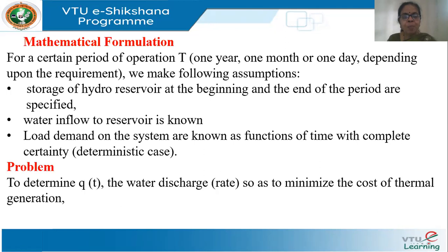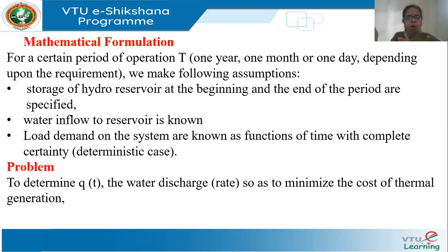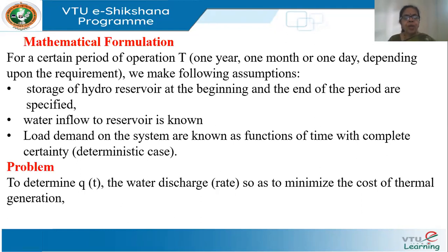The problem statement: I have a period of operation T, say one day, divided into equal intervals — for example, one-hour or eight-hour blocks. The problem boils down to determining the water discharge rate q(t) at each sub-interval so as to minimize the cost of thermal generation. This solution will also tell me what the hydel generation and thermal generation are at each sub-interval.